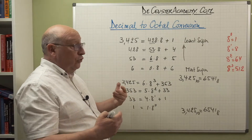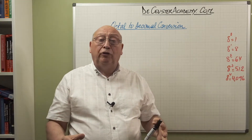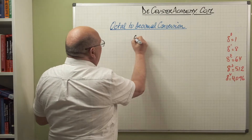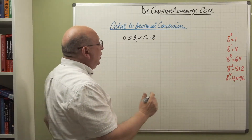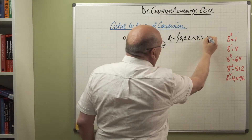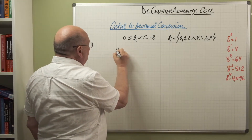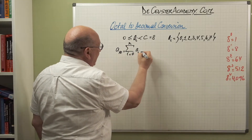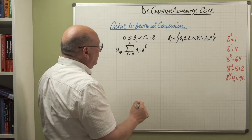The last thing to do in this video is the conversion from an octal number to a decimal number. When we look at octal, we know that each digit aᵢ is between 0 and 7. So aᵢ can be 0, 1, 2, 3, 4, 5, 6, or 7. To write the decimal number, we use the formula: the decimal number equals the sum from i = 0 to n of aᵢ times 8 to the power i.